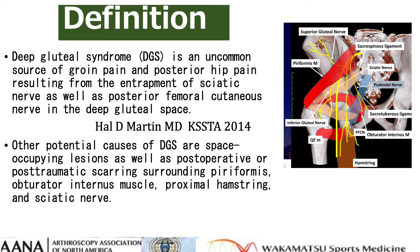Deep gluteal syndrome is a common source of groin pain and posterior hip pain resulting from the entrapment of the sciatic nerve and posterior femoral cutaneous nerve in the deep gluteal space. Other potential causes of DGS are space-occupying lesions as well as posterior operative or post-traumatic scarring surrounding the piriformis, obturator internus muscle, and proximal hamstrings and sciatic nerves.